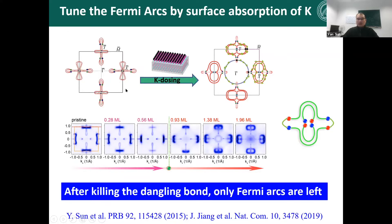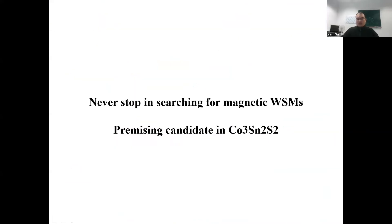This is the result: the compound from the TaAs class of compounds gave a clear picture for the Fermi arc. At this time, people never stopped searching for the magnetic Weyl semimetal.